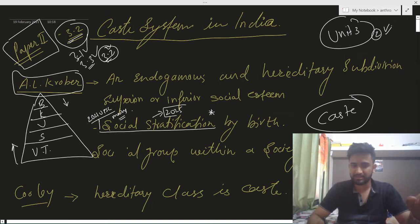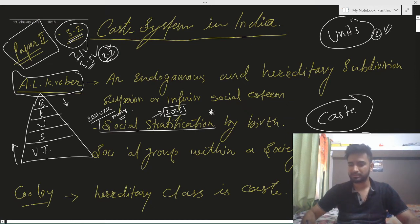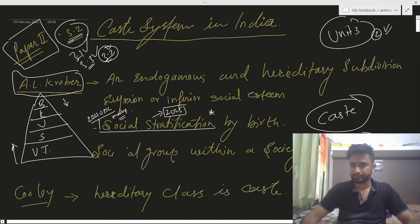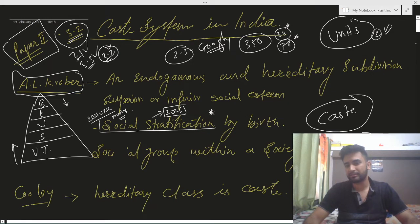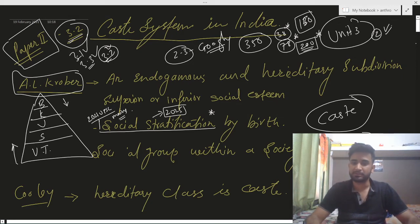Social stratification is not in discussion till 2024 or 2025, so you can eliminate it. In anthropology, there are not more than 350 standard questions which will be asked, except two or three 'googlies' put by UPSC. UPSC asks around 38 questions in one paper per year, and around 78 questions per year for two papers. Over two years, that's roughly 150 questions, leaving about 200 questions remaining.